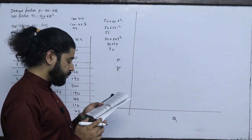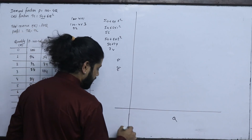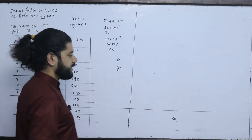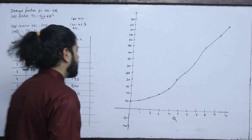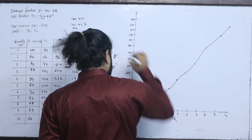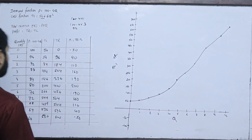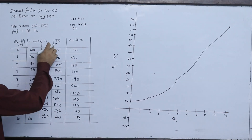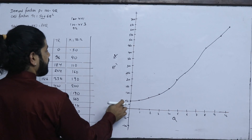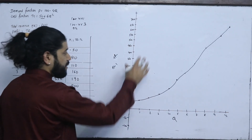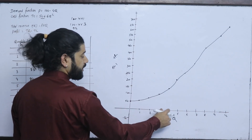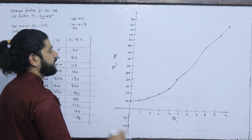Now we will plot the total cost and total revenue on a graph. The quantity axis goes from 1 to 10. We plot the total cost ranging from 50 to 650, and we plot the total revenue. We use the scaling to prepare the exact shape on graph paper.